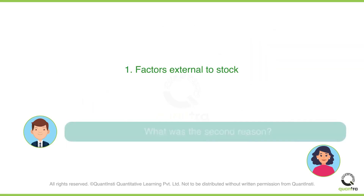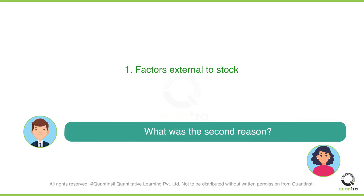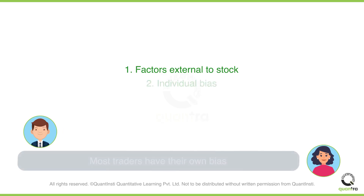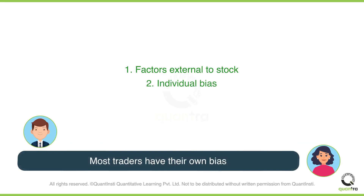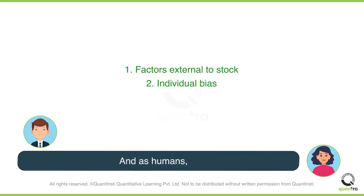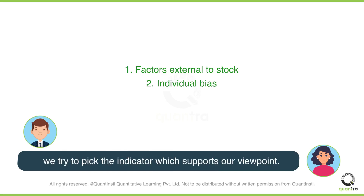John asks about the second reason. Sophie explains: you may have already experienced this while trading. Most traders have their own biases. If you check various resources, you will find more than 100-plus popular technical indicators, and as humans, we try to pick the indicator which supports our viewpoint.